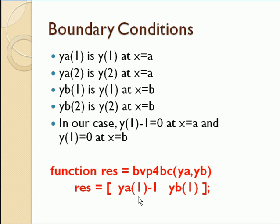The second one is that y of one should be zero at x equals b, or yb of one should be zero. So we just put yb of one here. So when this vector is zero, zero, we've satisfied our boundary conditions.